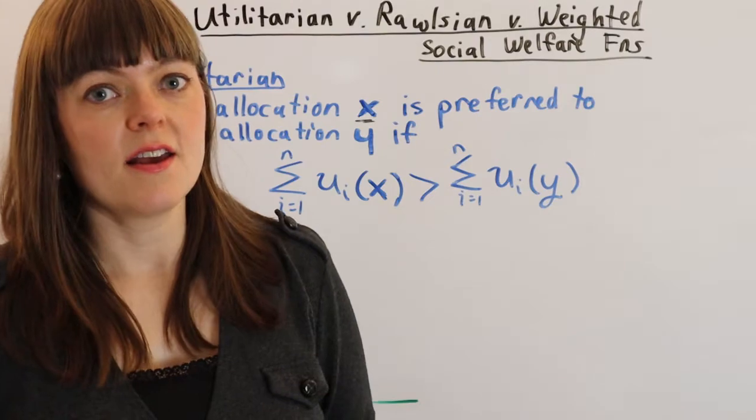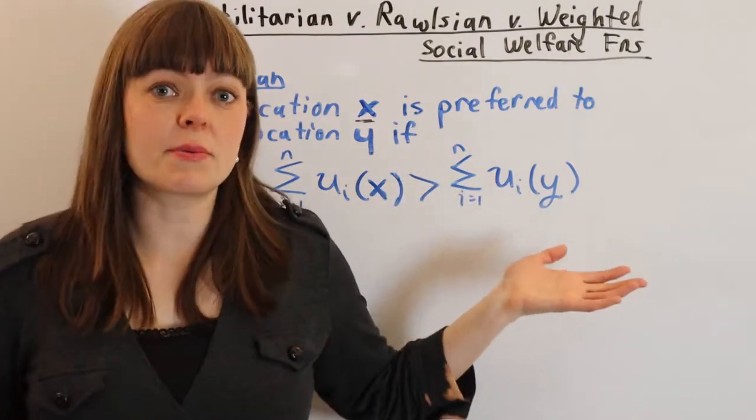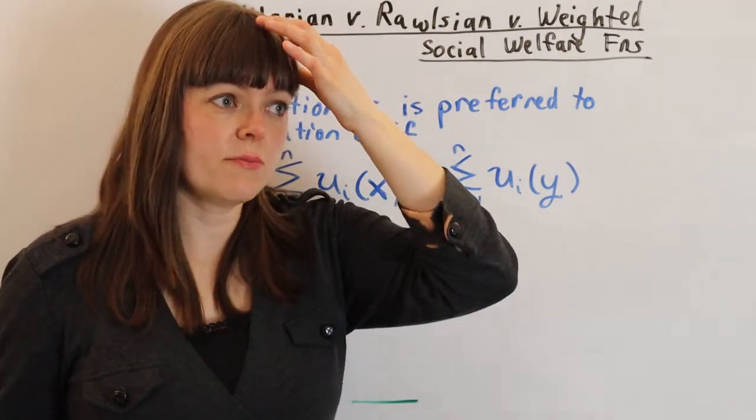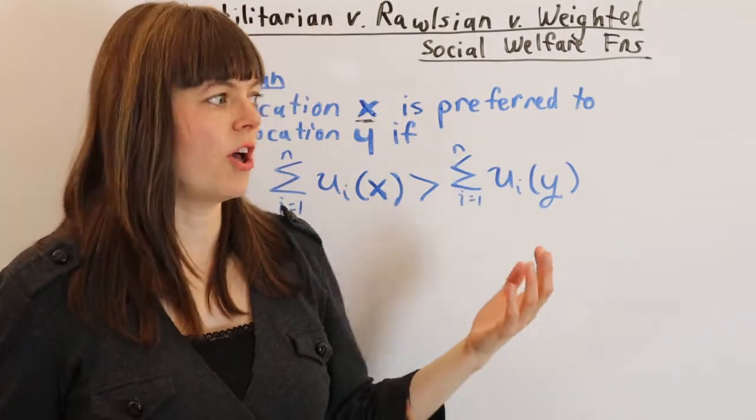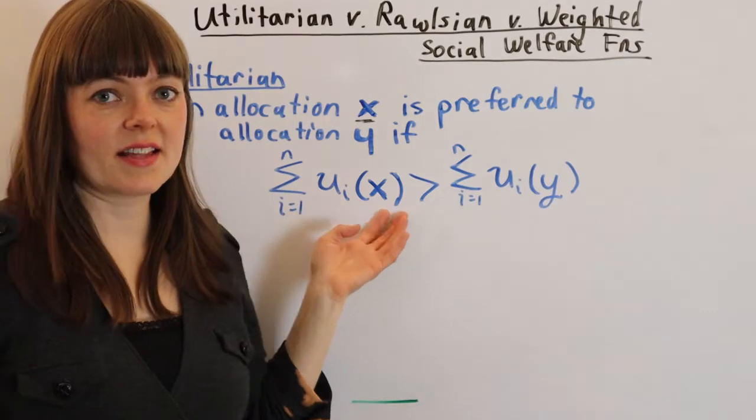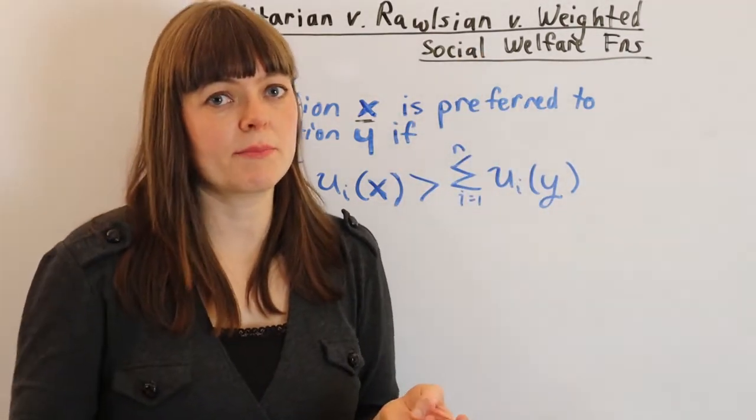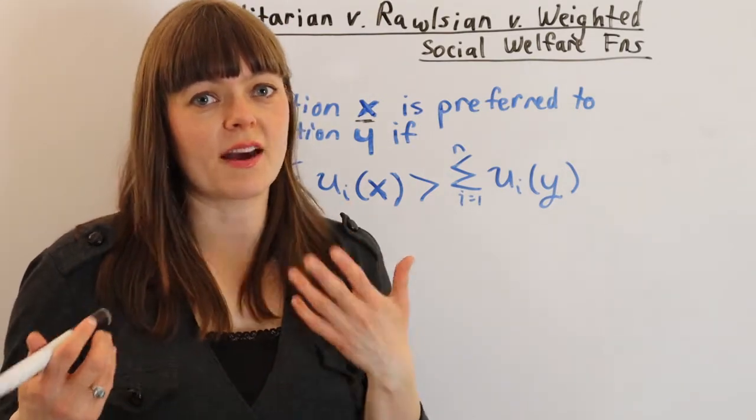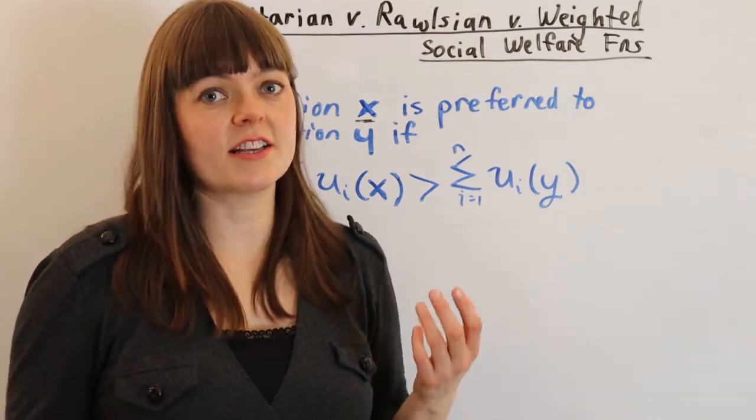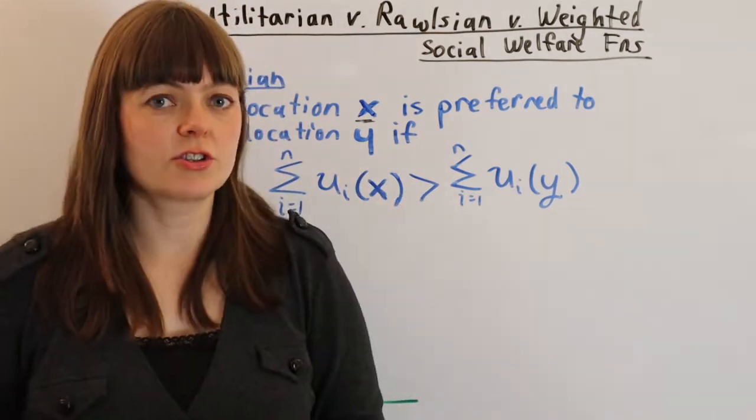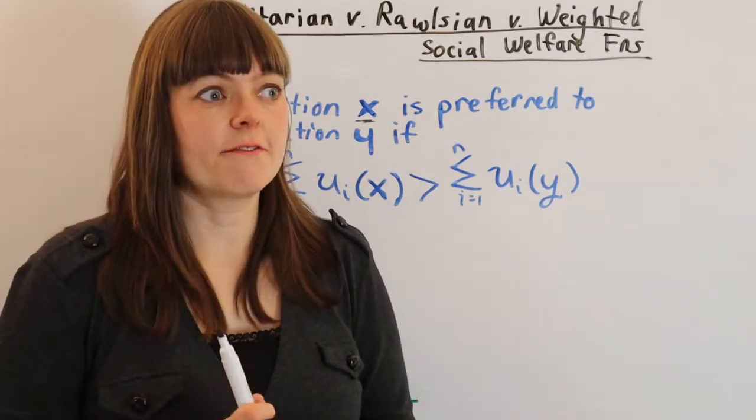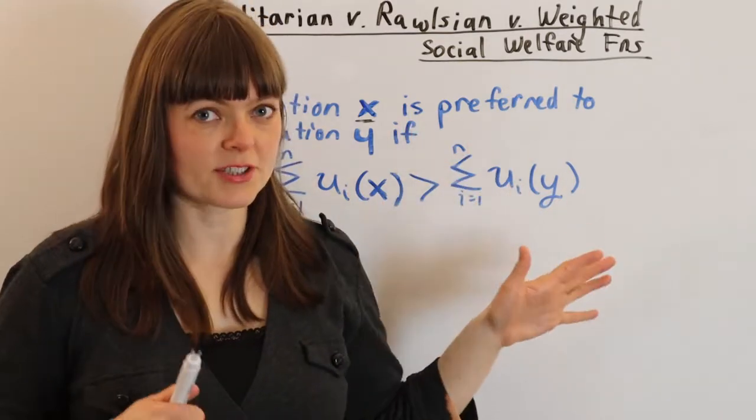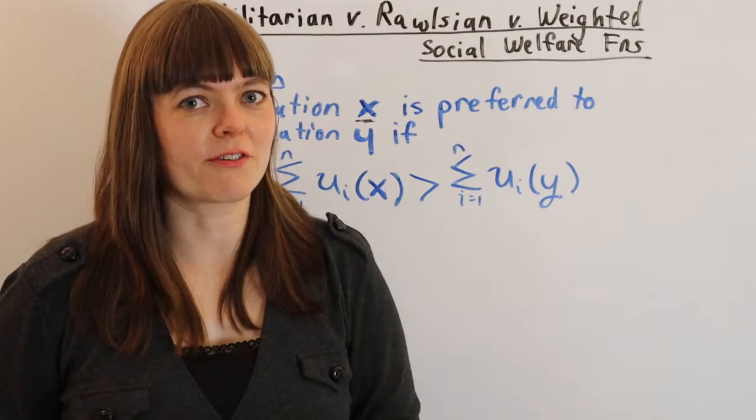Now of course, an issue a lot of people have with this is the fact that this does not reference inequality. It could be that one particular allocation would maximize the collective added up utility, but there's some people who are really bad off or who get a really unfair deal in the allocation. In which case you may want to use a different social welfare function if the equality issue is something that weighs heavily on you. So let's look at a couple of other options we have for social welfare functions.